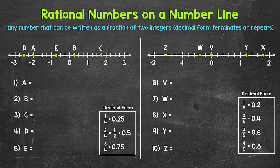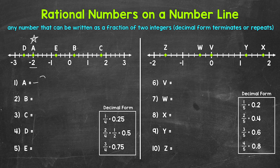Going left from zero, we have negative one fourth, negative two fourths (which is negative one half), negative three fourths, negative one, negative one and one fourth, negative one and a half, negative one and three fourths, negative two, and so on. Looking at number one, we have point A, which is at negative two on the number line.